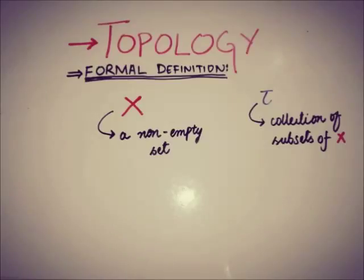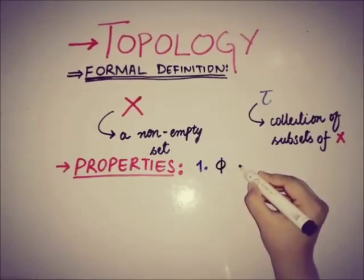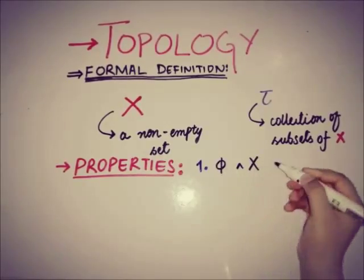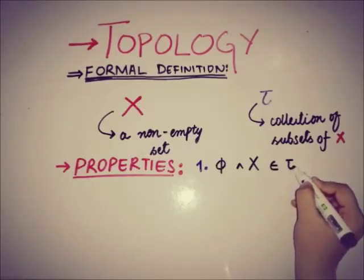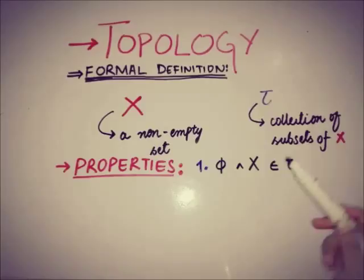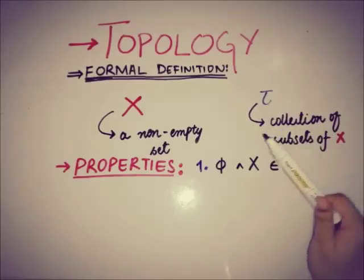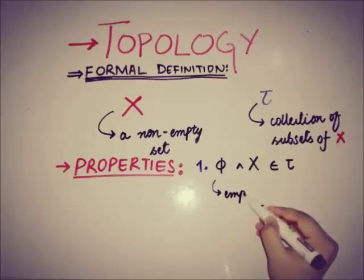This tau is said to form a topology on X if it satisfies three main base properties. The very first property is that an empty set and the set X itself should belong to tau.